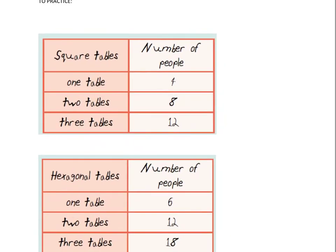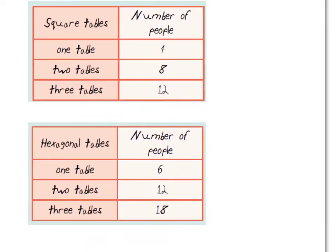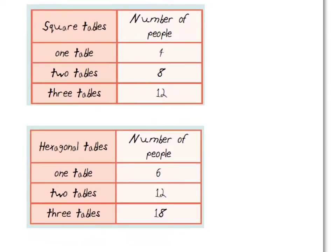Alright, now you get to do some practice, and here we have some tables of information, and you need to determine the rule for each table of information. So here we have one table, they're square tables, it fits 4 people, 2 tables fit 8 people, 3 tables fit 12 people. What are we doing to get from the 4 to the 8 to the 12? Here we have hexagonal tables. The hexagon, remember, has 6 sides. So 1 table fits 6 people, 2 tables fit 12 people, 3 tables fit 18 people. What's happening to get from 6 to 12 to 18 and so on? Press pause and with your partner, find those rules.